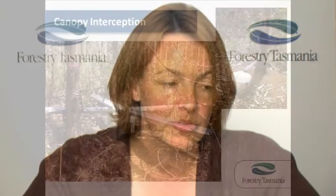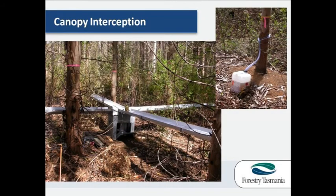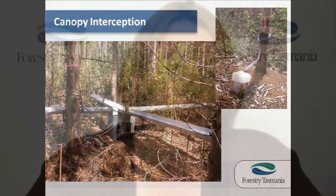The second process we've been measuring is canopy interception. Canopy interception is determined by measuring rainfall outside the forest and then collecting throughfall — the amount of water that falls through the canopies and lands on the forest floor — and also measuring stem flow, which is the water that drains from the trees down the stems and reaches the soil. If we know what rainfall is, we subtract throughfall and stem flow to get an estimate of canopy interception.